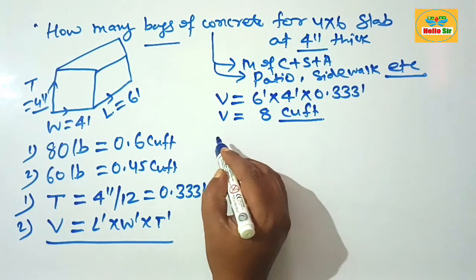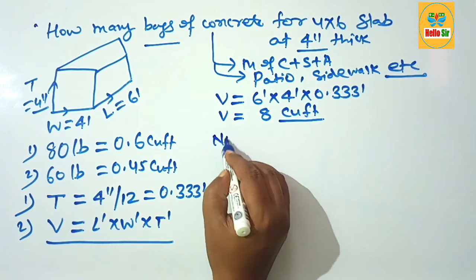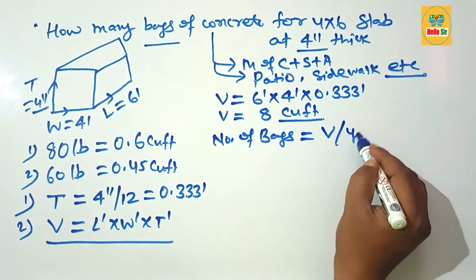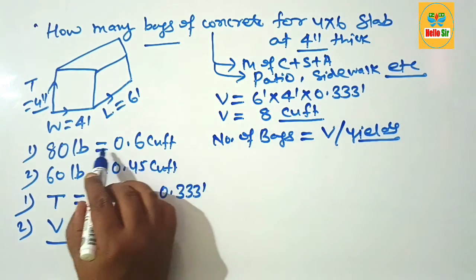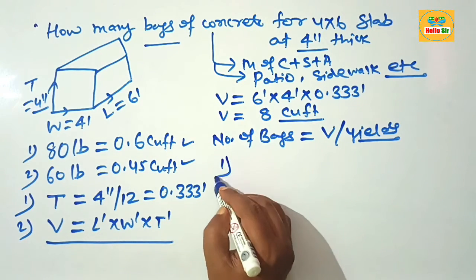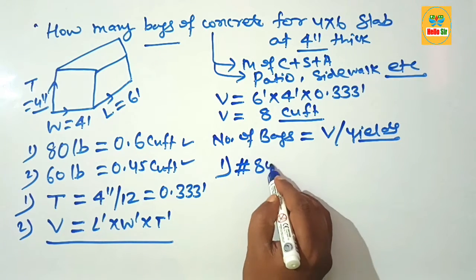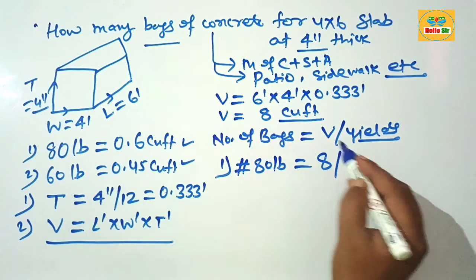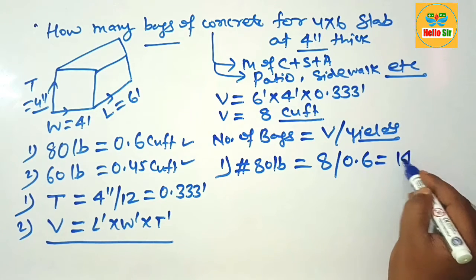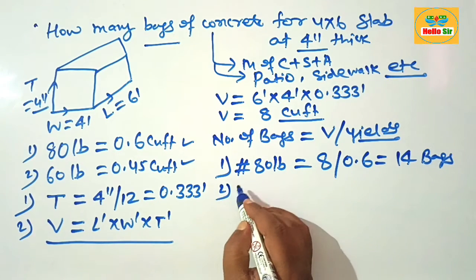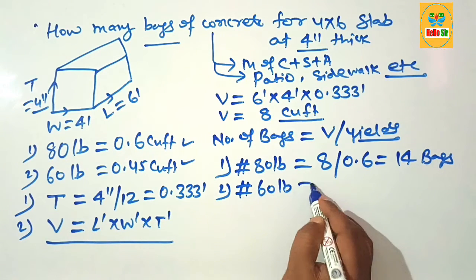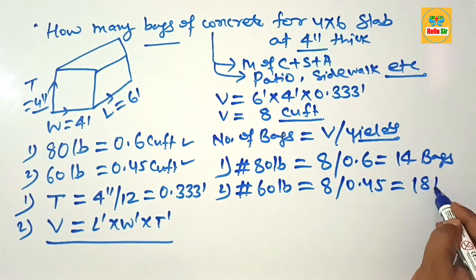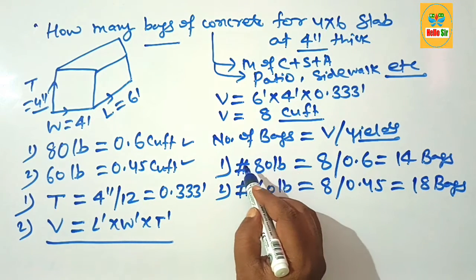The formula to calculate the number of bags is: total volume divided by the yield of one bag of concrete. For 80 pound bags: 8 cubic feet divided by 0.6 yields about 14 bags. For 60 pound bags: 8 divided by 0.45 yields about 18 bags.